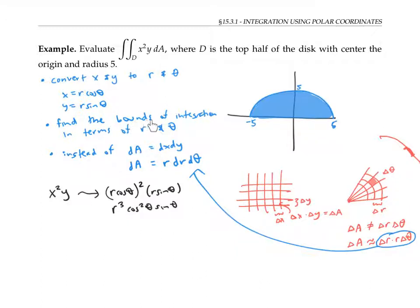Next, we need to find the bounds of integration in terms of r and theta. We can do this by writing the region in terms of polar coordinates. So this region D is the set of points with r theta, where r is between zero and five, since five is the radius of the circle,